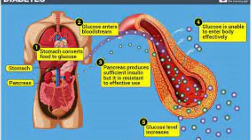Eventually, diabetes complications may be disabling or even life-threatening. Possible complications include heart and blood vessel cardiovascular disease. Diabetes majorly increases the risk of many heart problems, including coronary artery disease with chest pain, angina, heart attack, stroke, and narrowing of arteries. If you have diabetes, you're more likely to have heart disease or stroke.